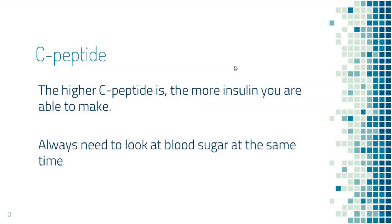One marker that tells us how much insulin you are able to make is called C-peptide. The higher the C-peptide is, the more insulin you are able to make. However, you always need to understand it in the context of blood sugar. When blood sugar is high, people will naturally make more insulin, resulting in a higher C-peptide level. If you see a normal C-peptide level in the setting of high blood sugar, that means your pancreas is not able to produce the appropriate amount of insulin in response to high blood sugar — or you can say that the C-peptide level is too low for that blood sugar level.